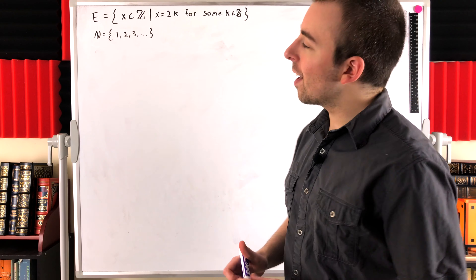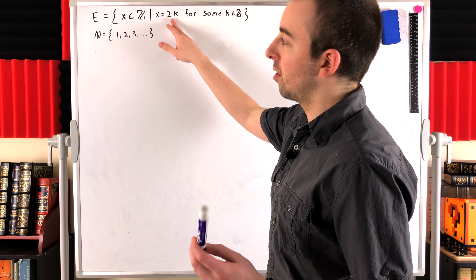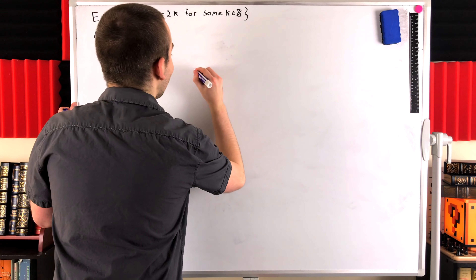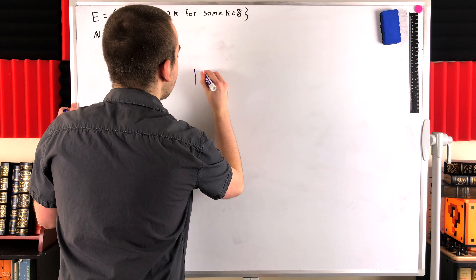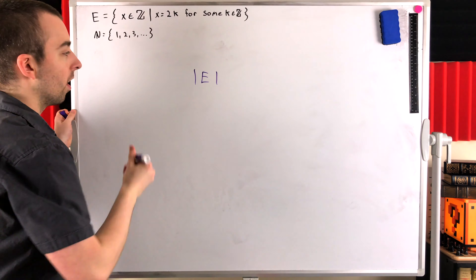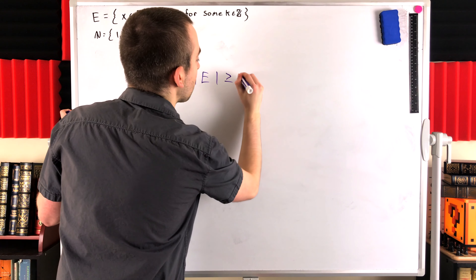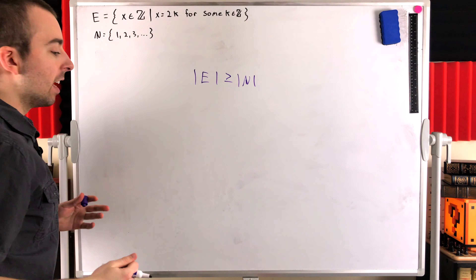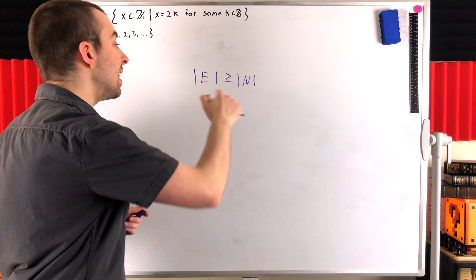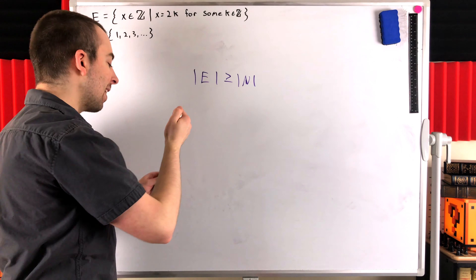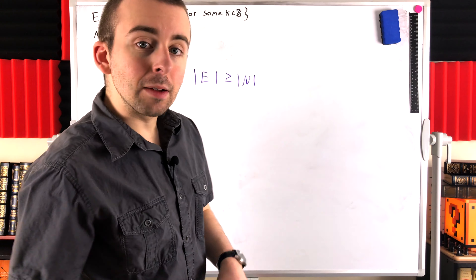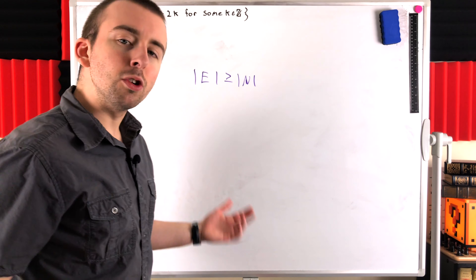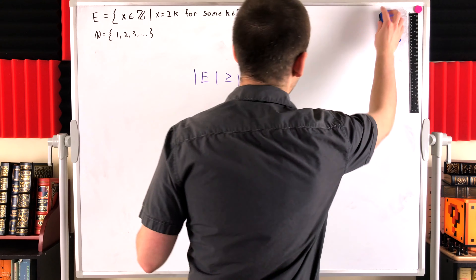Remember, to show that there is a surjection from, say, the evens to the naturals is to show that the cardinality of the even numbers, which we're calling E, is greater than or equal to the cardinality of the naturals. So there are at least as many even numbers as there are naturals. That seems like a pretty clear and obvious result, so it shouldn't be too hard to come up with a surjection.